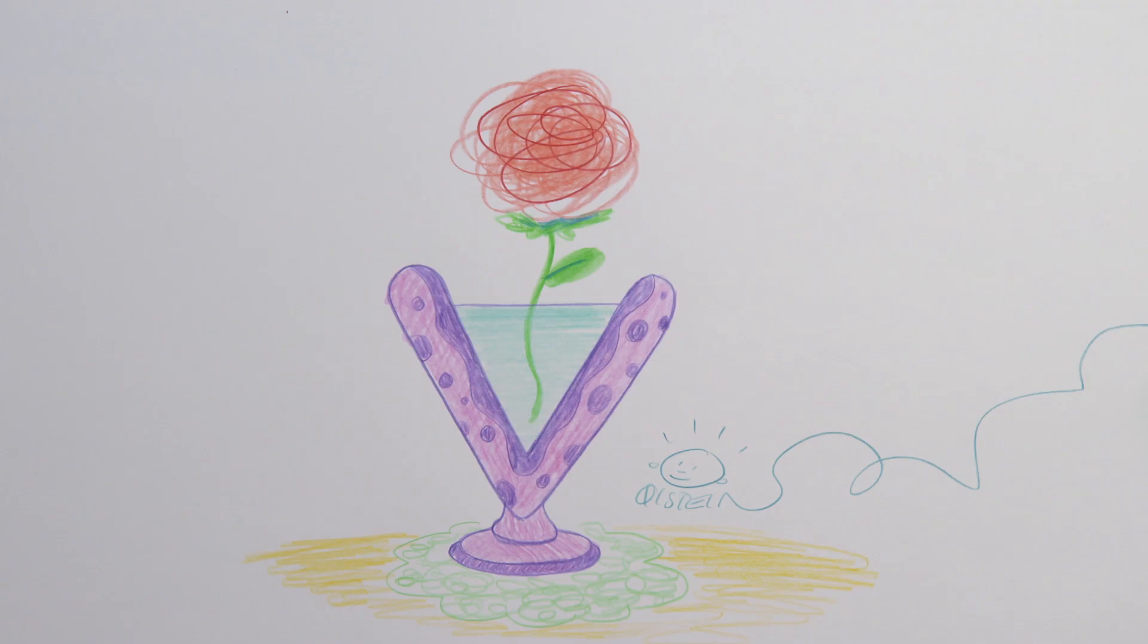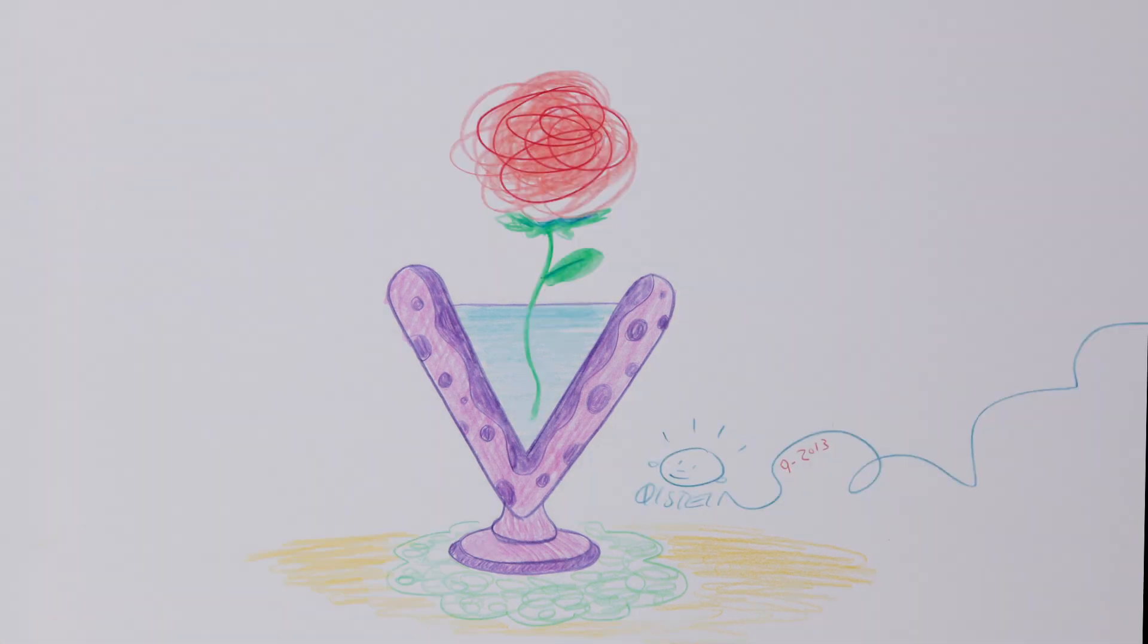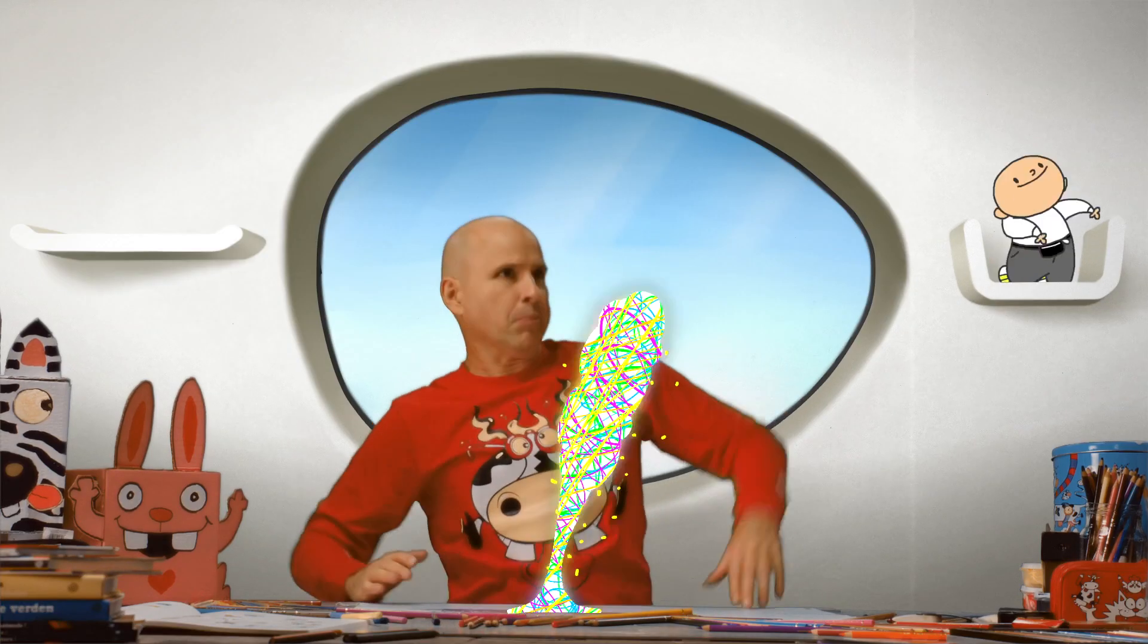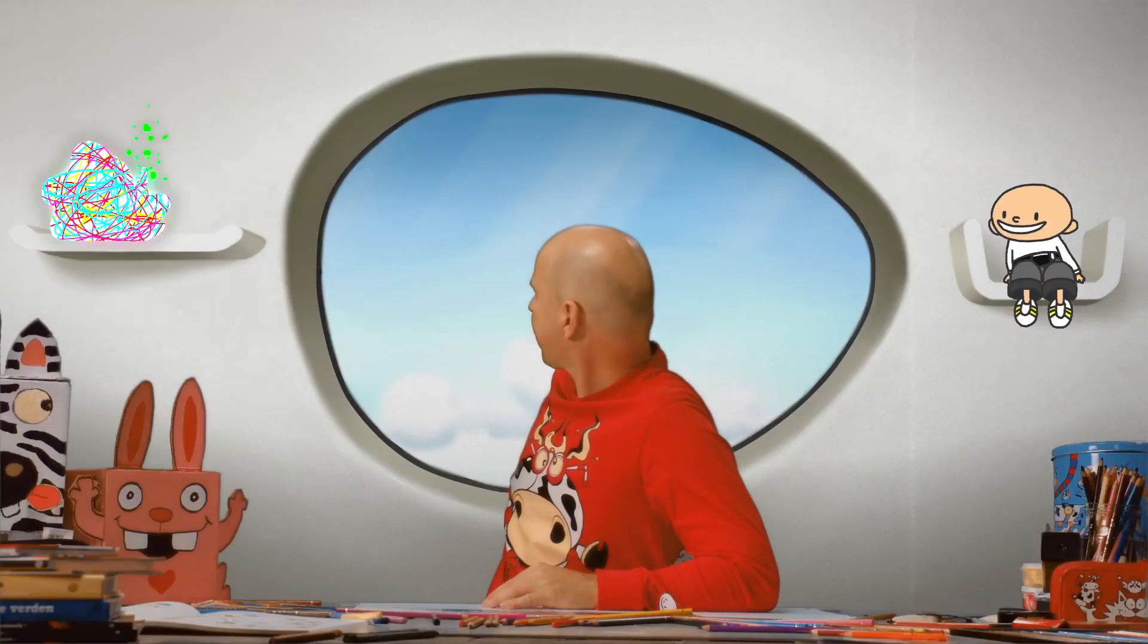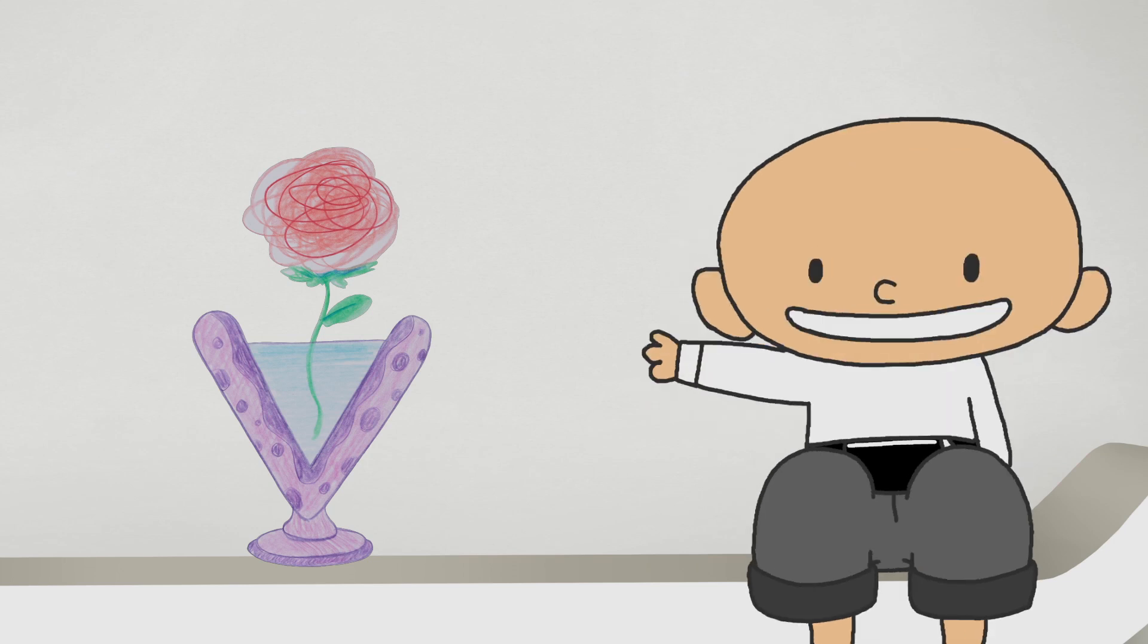Wow! What a beautiful vase! Let's watch it one more time. First, draw a V. Next, fill it with water and color in the V. Finally, draw a huge flower with pink petals, green leaves and a stem.